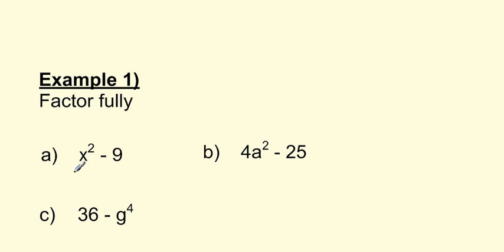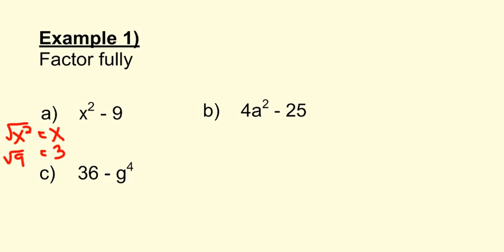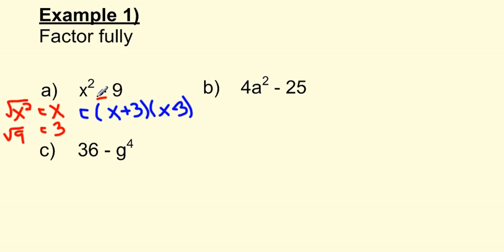Example 1 — factor fully: x squared minus 9. First, check if we can use the difference of squares. The square root of x squared is just x. Can I find the square root of 9? That's just 3. And is there a minus sign in between? Yes there is, so we can do this. The pattern gives us x plus 3 times x minus 3. Remember: square the first term gives x squared, square the second term gives 9, and there's a subtraction sign in between.